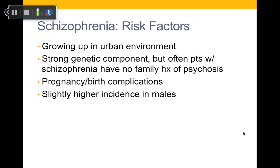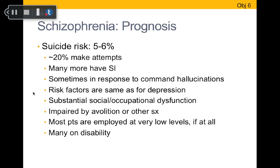Risk factors for developing schizophrenia include growing up in an urban environment, a strong genetic component (it runs in families, though usually not with first-degree relatives with psychosis), pregnancy and birth complications, and a slightly higher incidence in males. These risk factors are quite vague and nonspecific, meaning we can't reliably predict who will develop these disorders.